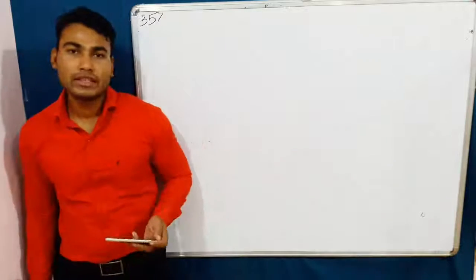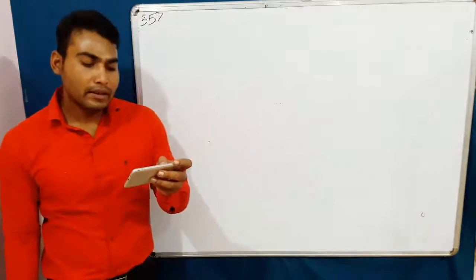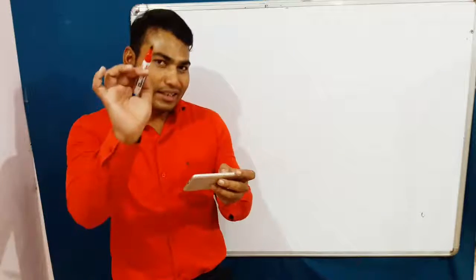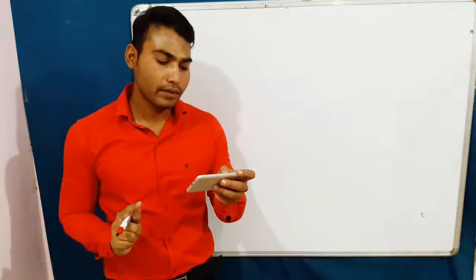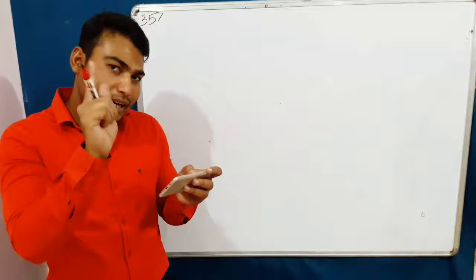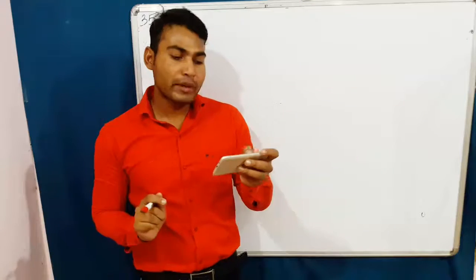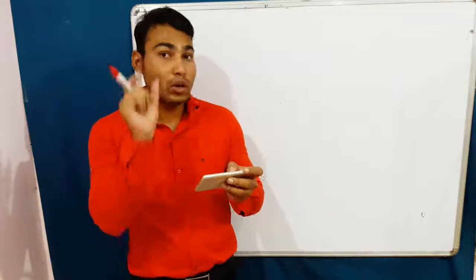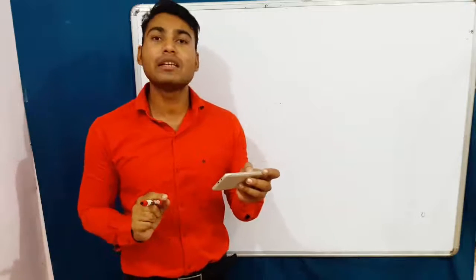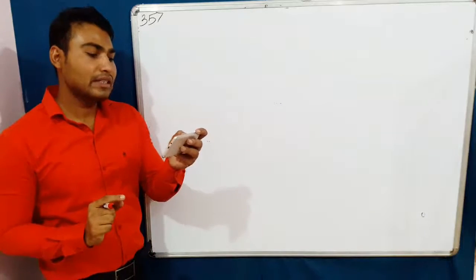Let us move to question number 35. A metal crystallizes in a face-centered cubic structure. If the edge length of its unit cell is A, the closest approach between two atoms in the metallic crystal will be — what is the answer?